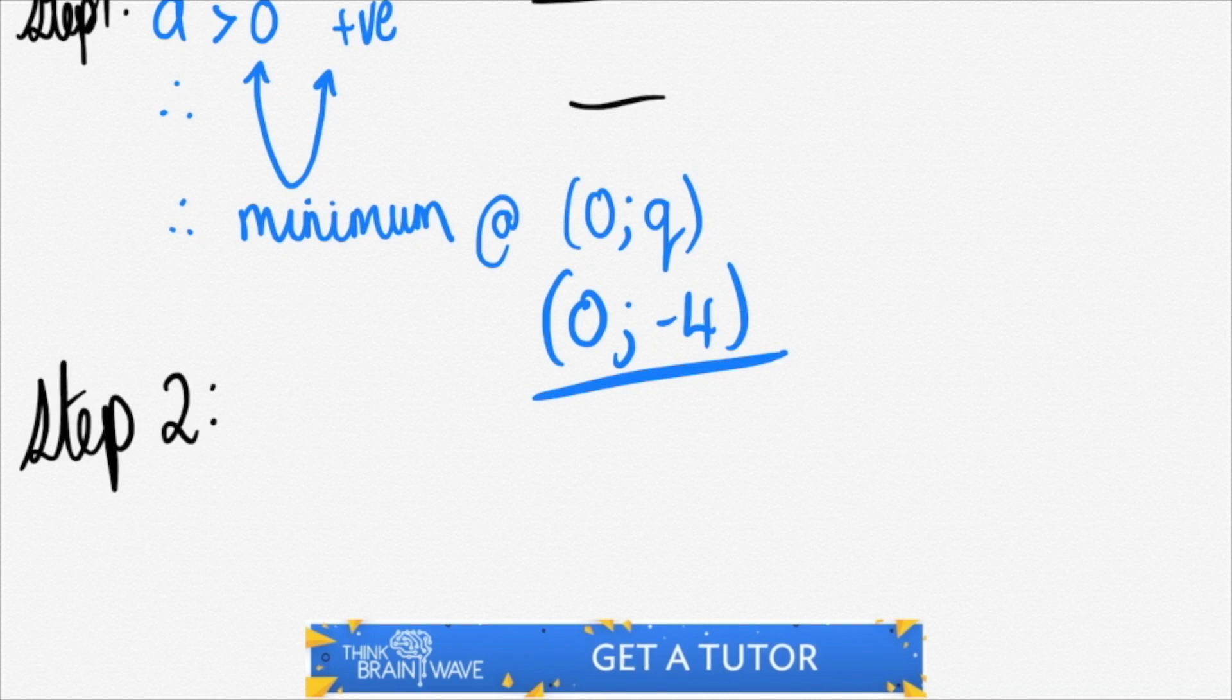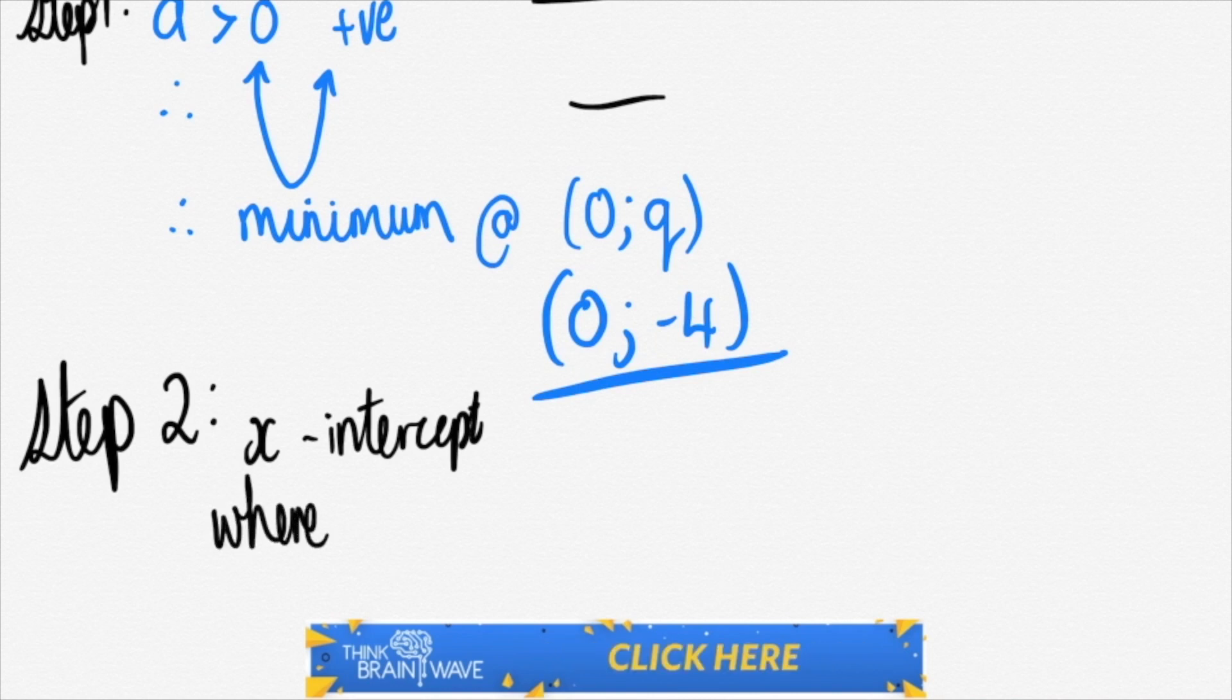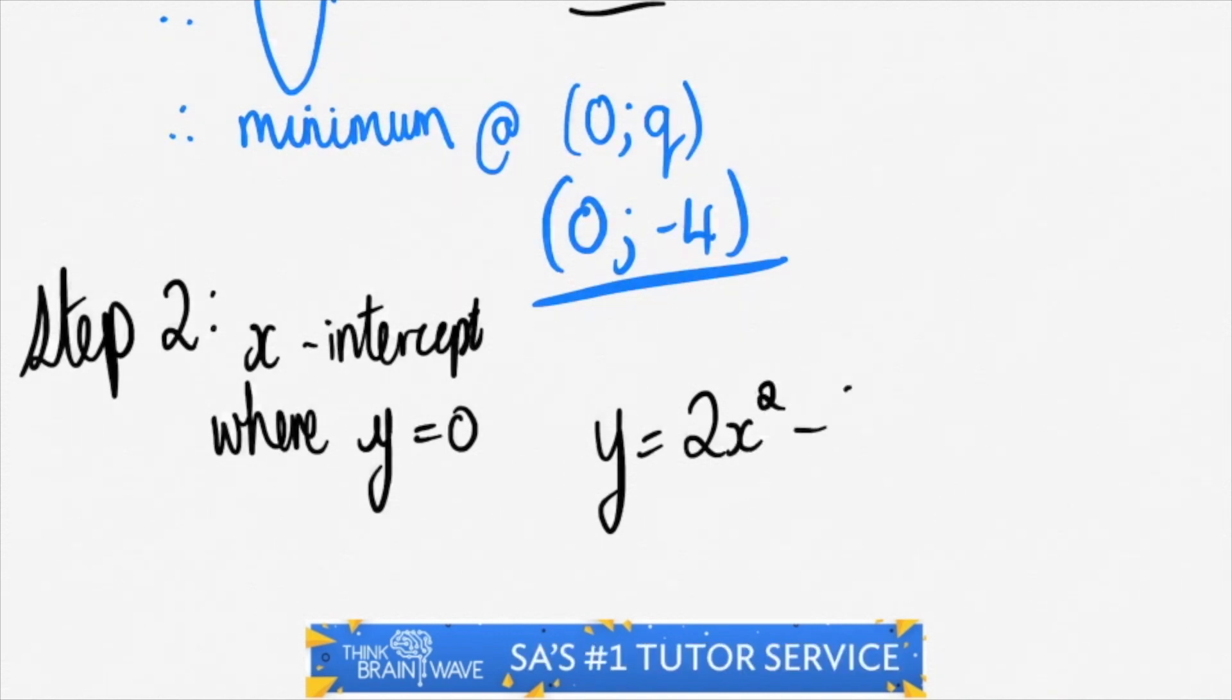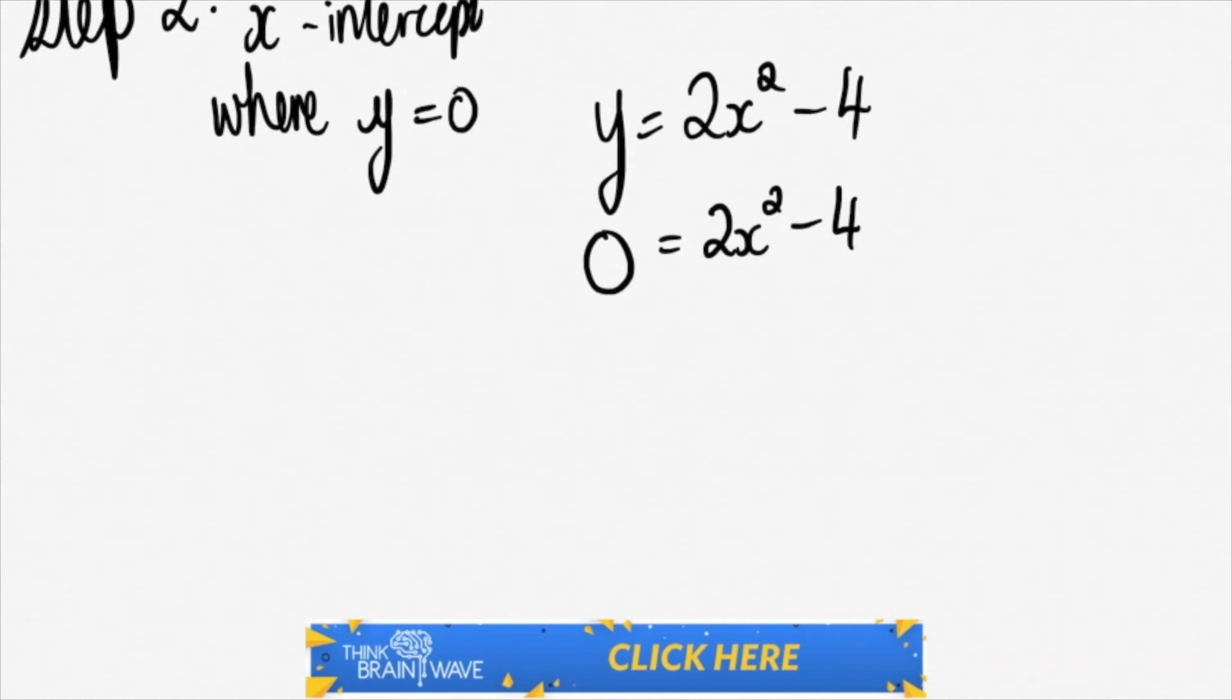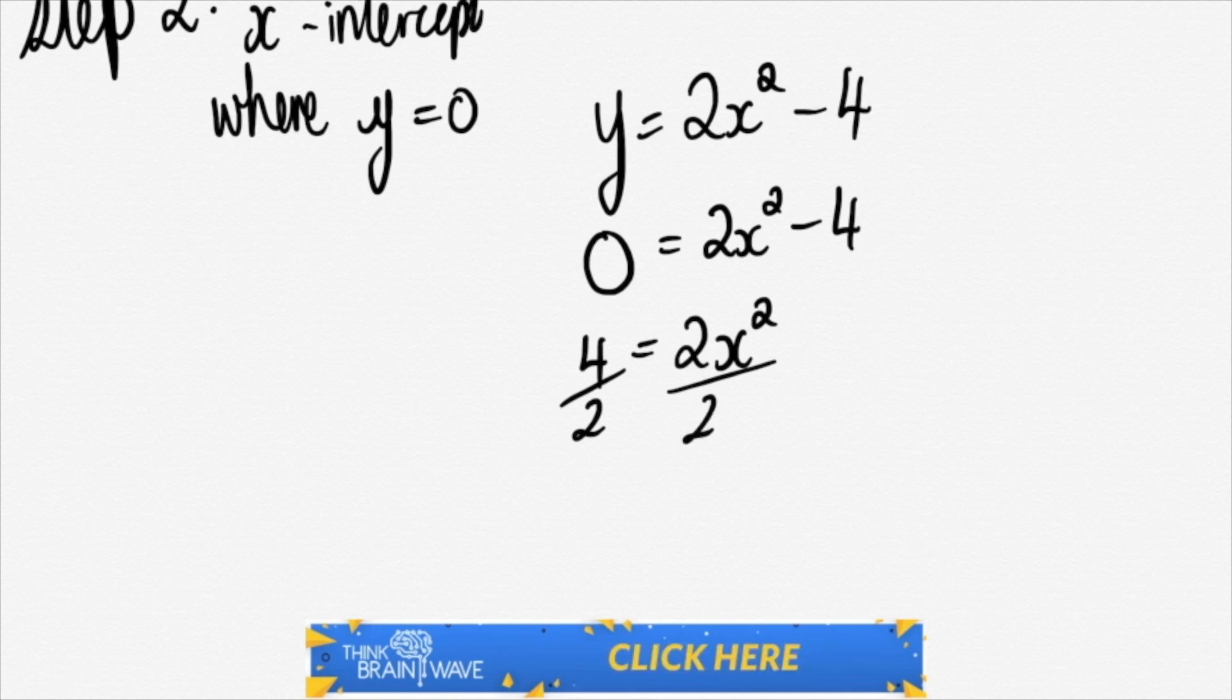Step 2. Let's find the intercepts. So let's say for instance the x-intercept first. Whether you do the y-intercept or the x-intercept doesn't really make a difference. So start with the x-intercept where y is equal to 0. We plug that in. We say 0 is equal to 2x squared minus 4. We then take the minus 4 and change it to positive 4 and put it on the left hand side. We then divide both sides by 2. So cancel out the 2 next to the x-squared. This leaves you with 2 is equal to x-squared.